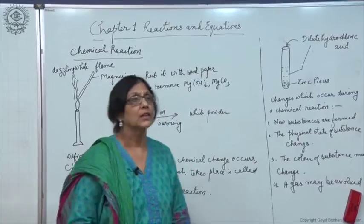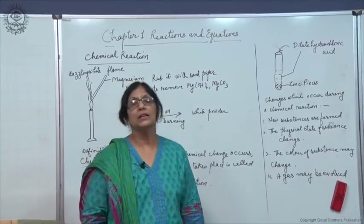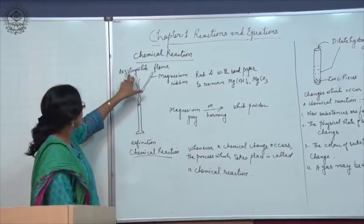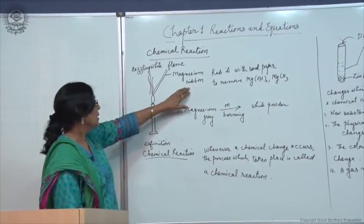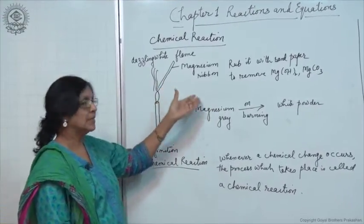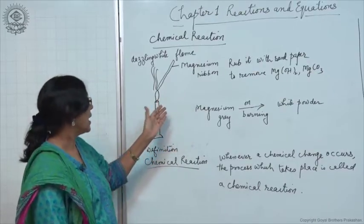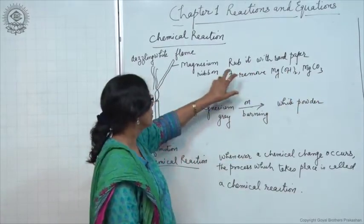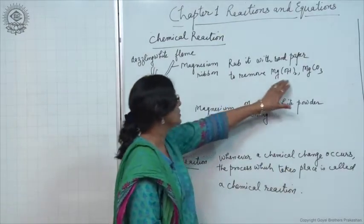Chemical reaction. Let us discuss certain activity to be performed in the chemistry lab. Let us take first of all magnesium ribbon which is grey in colour. Now, magnesium is very reactive. It reacts with the air and combines with the oxygen and carbon dioxide present in air and forms magnesium hydroxide and magnesium carbonate. So, this magnesium ribbon first of all should be rubbed with sandpaper to remove these compounds.